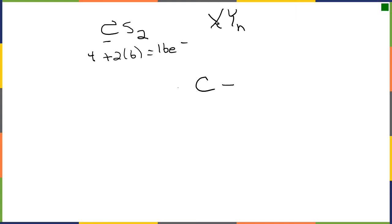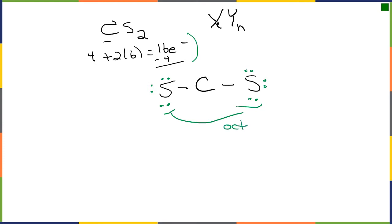We bond carbon to each of the sulfurs, using four electrons total in single bonds, leaving 12. We put those 12 remaining electrons on the sulfurs — two, four, six, eight, ten, twelve. We've used all 16 electrons and sulfur obeys the octet rule, but carbon does not, so we have to start shifting electrons around.